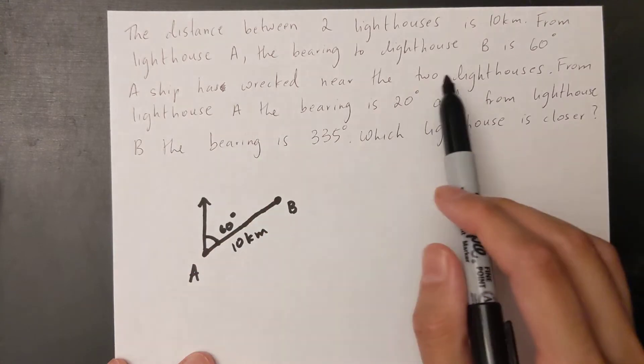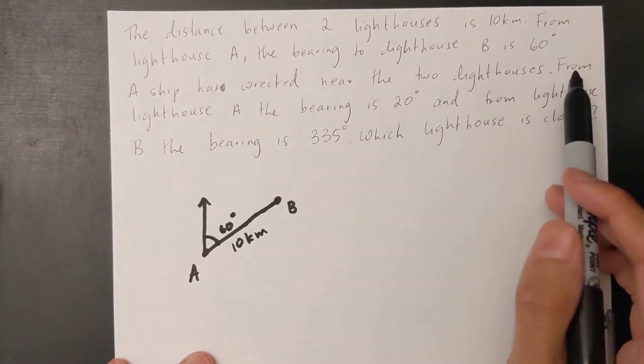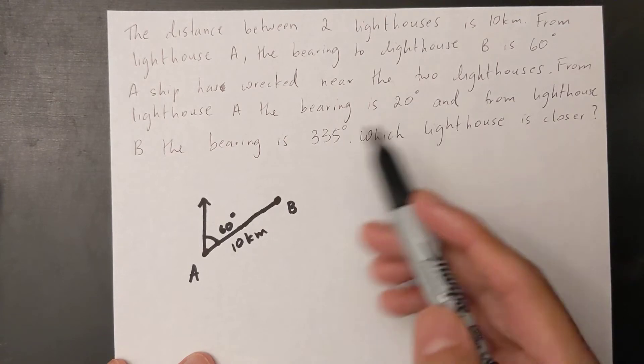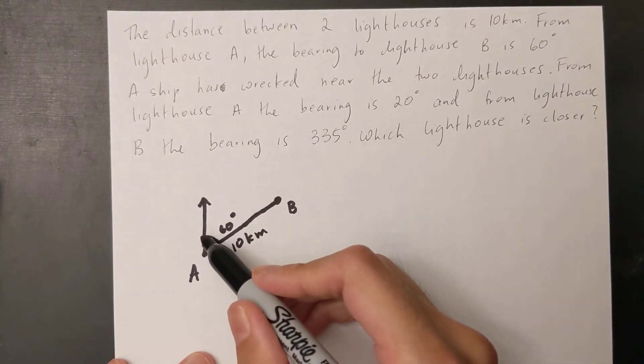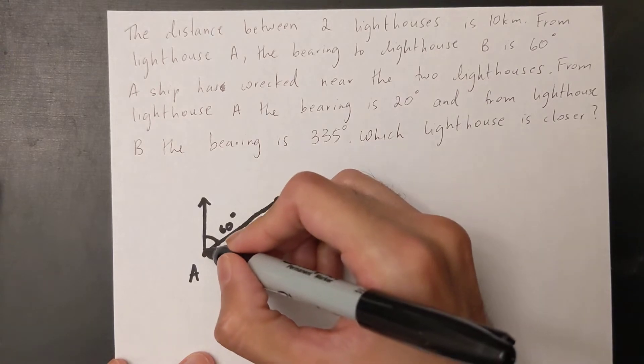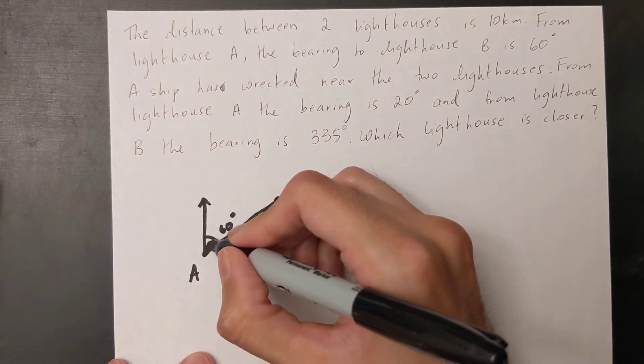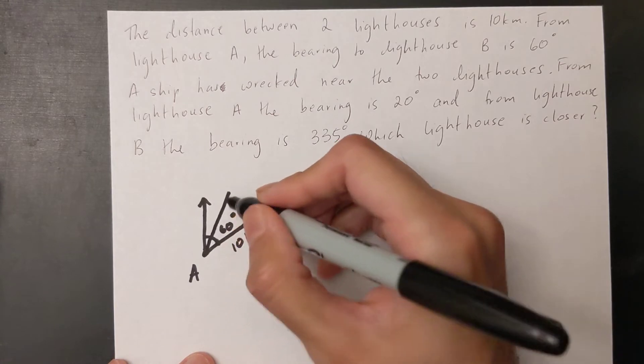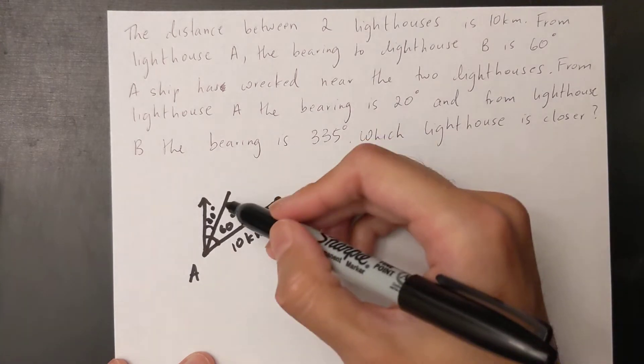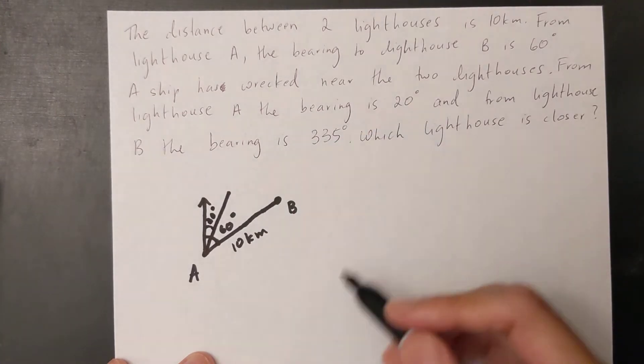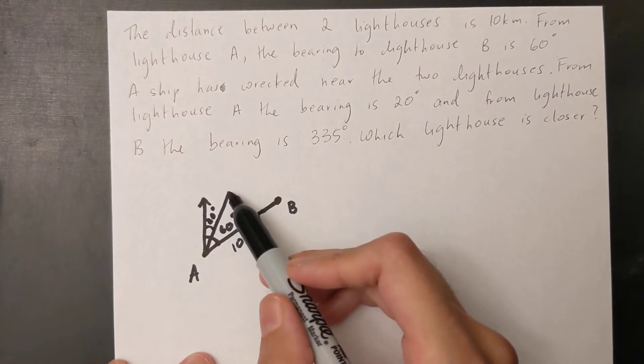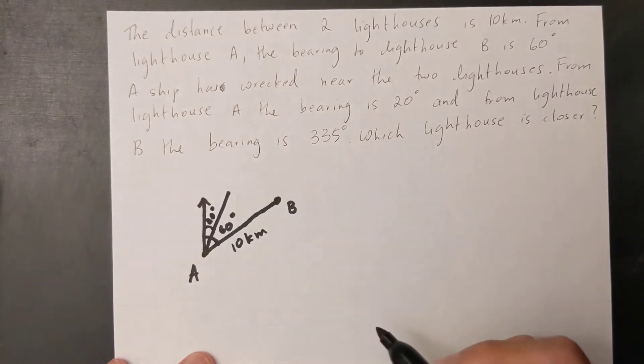A ship has wrecked near the two lighthouses. From lighthouse A the bearing is 20 degrees. So again I'm starting here and I'm doing 20 degrees which is a smaller angle than this 60, so approximately over here 20 degrees. Now you don't know how long this line is going to be until you complete the question, so we'll just stop it over there for now and if we need to extend it we can extend it later.